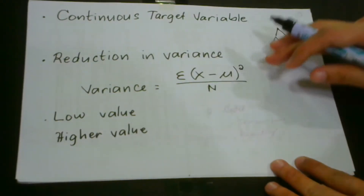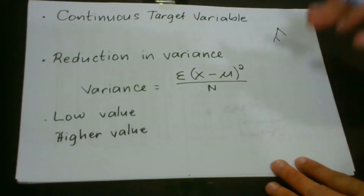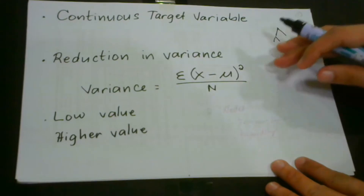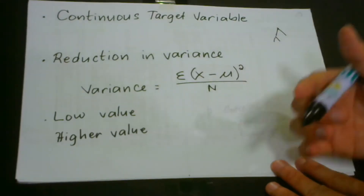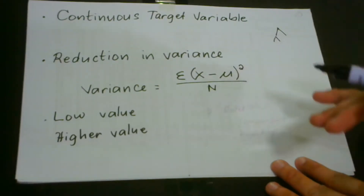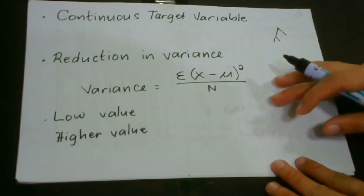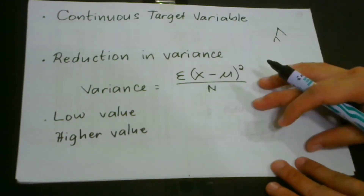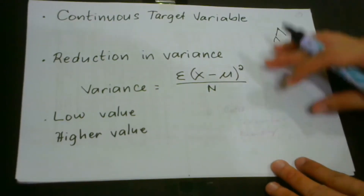I believe you already know what a continuous variable is. If you don't, I suggest you study our course, Machine Learning Algorithm Essentials, because all the basic foundational concepts and skills can be found there — for a proper understanding of the different algorithms we've been discussing, like decision trees, support vector regression, linear regression, and so on.